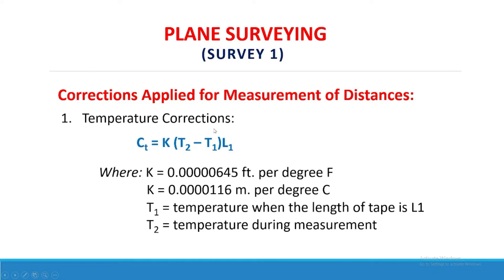Corrections applied for measurement of distances. Number one: temperature correction. The formula is C sub T (correction for temperature) equals K times (T sub 2 minus T sub 1) multiplied by L sub 1, where K equals 0.0000064 feet per degree Fahrenheit, or in Celsius K equals 0.0000116 meter per degree Celsius. T sub 1 is the temperature when the length of tape is L sub 1, and T sub 2 is the temperature during measurement.